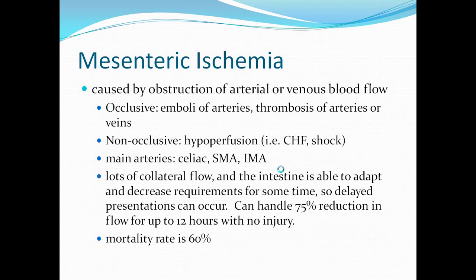Mesenteric ischemia is caused by obstruction of arterial or venous blood flow in the mesentery. This can take the form of occlusive injuries such as emboli of the arteries, thrombosis of the arteries or veins. It can also be non-occlusive, such as hypoperfusion from CHF or shock. The main arteries involved are the celiac, the superior mesenteric artery, and the inferior mesenteric artery.